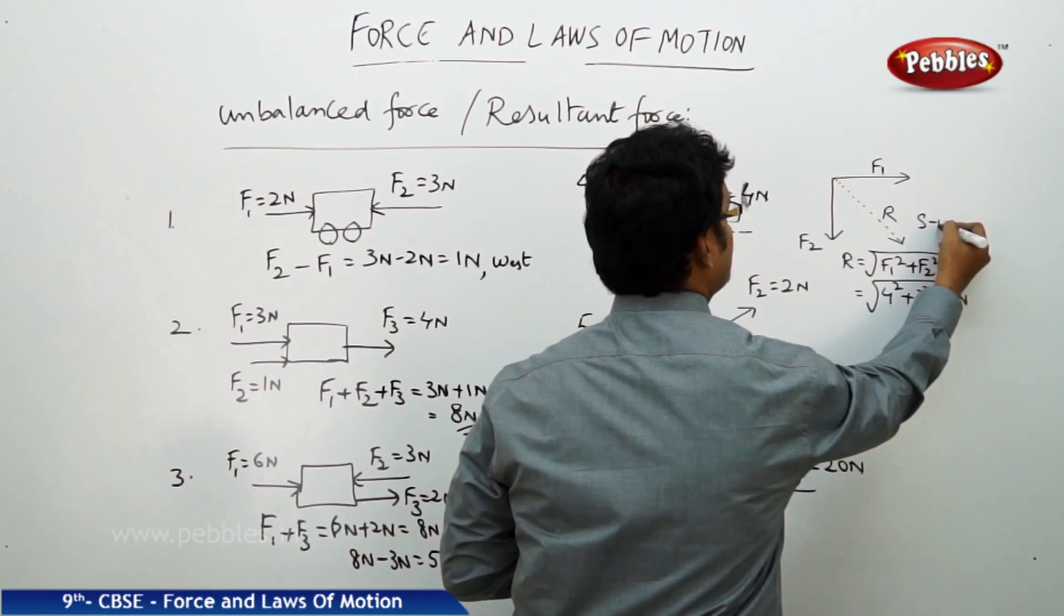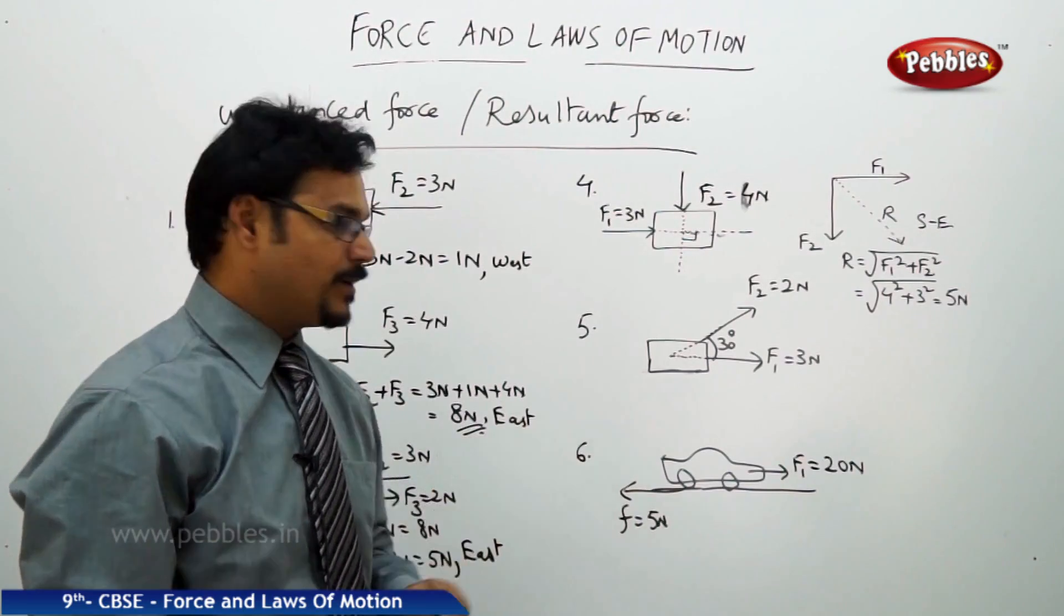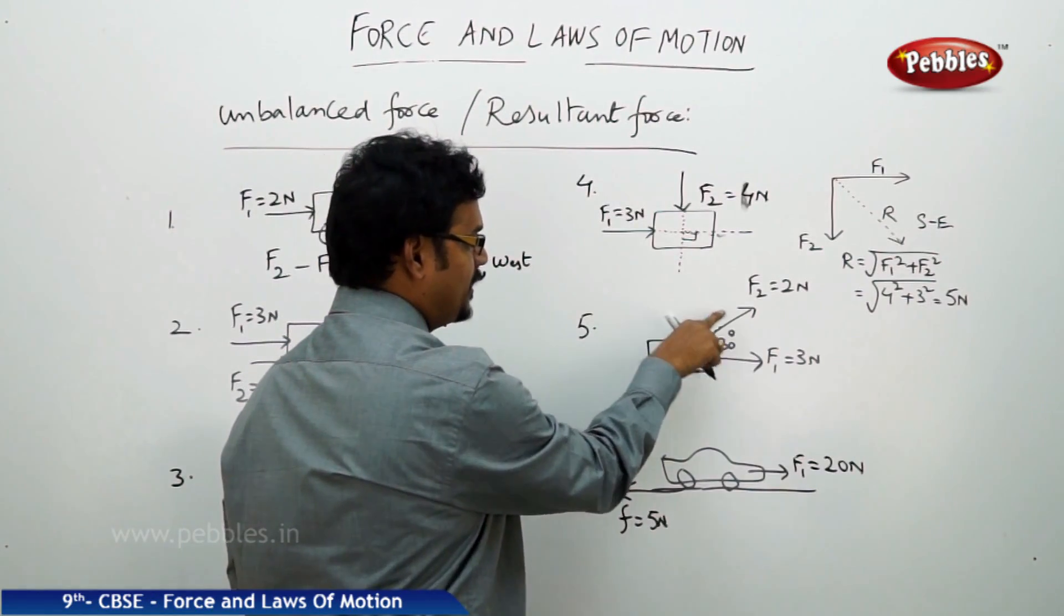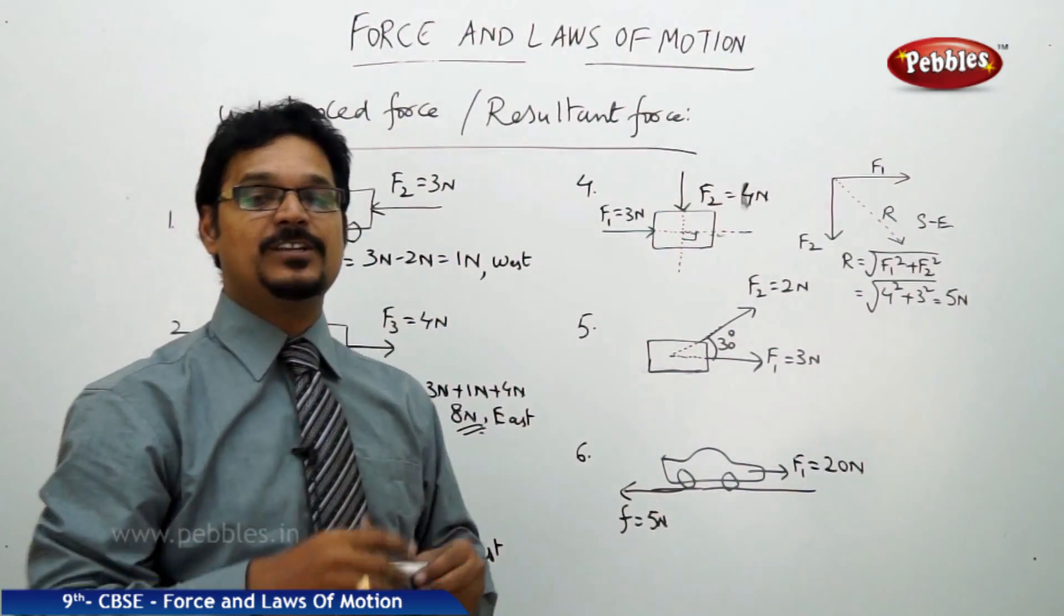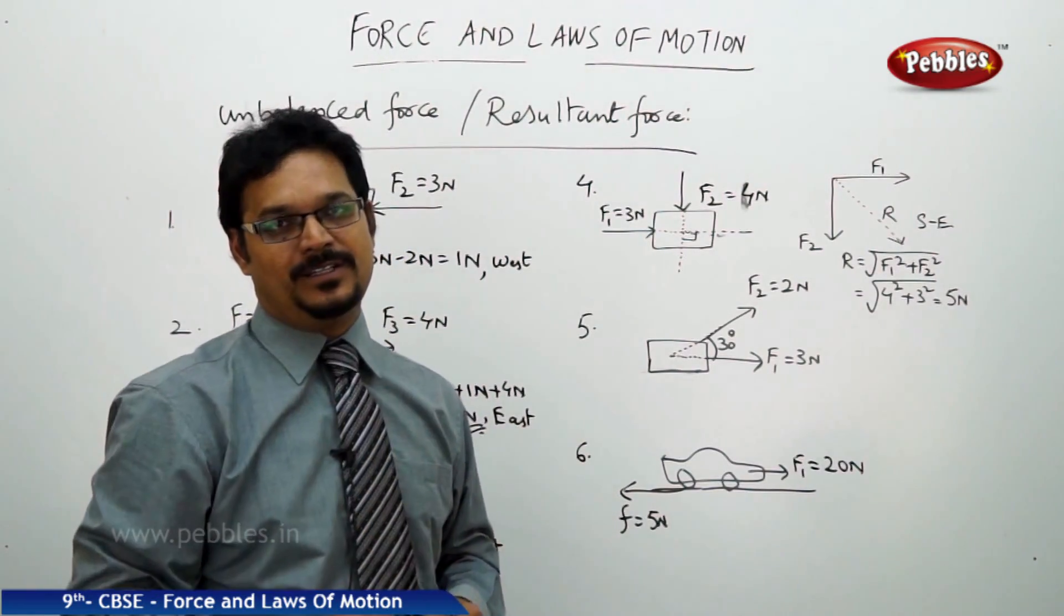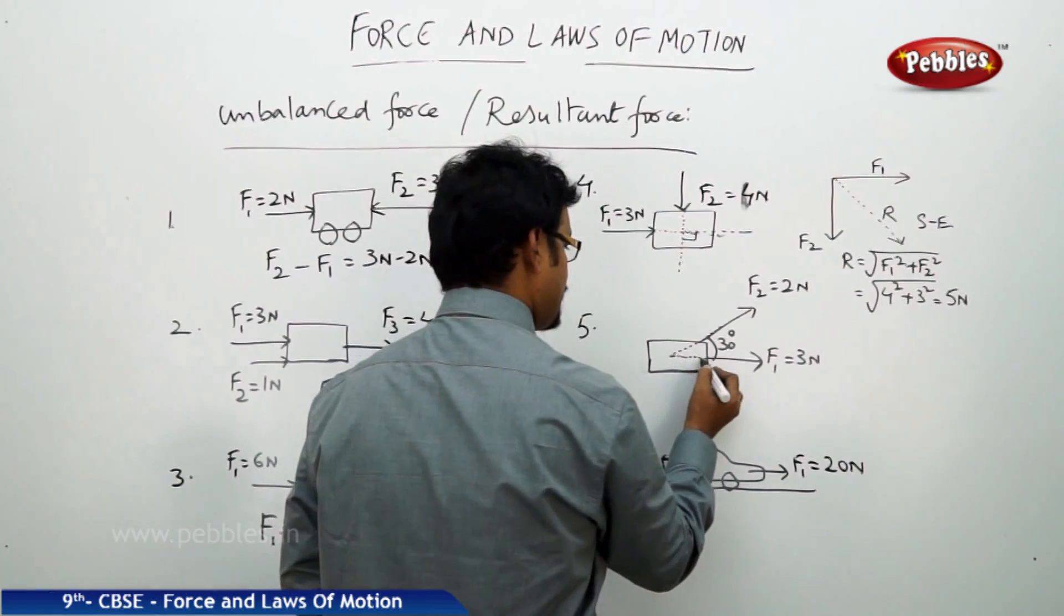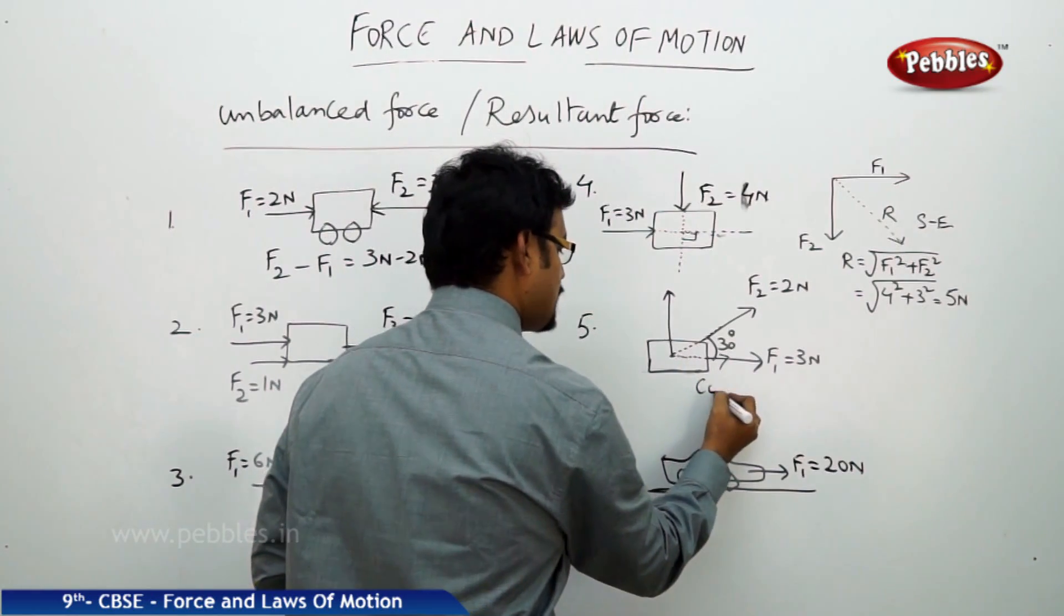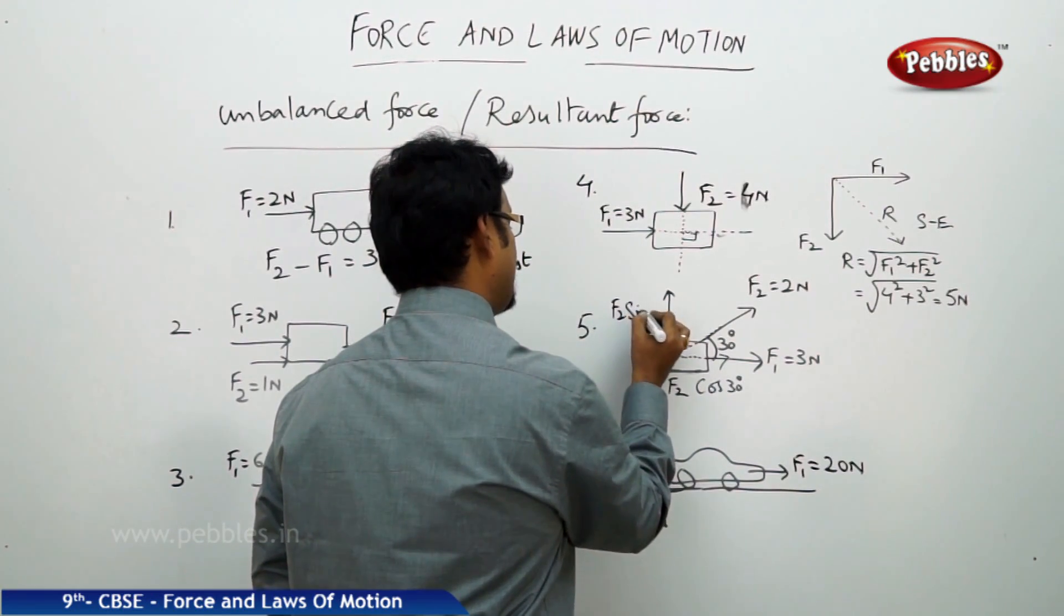Now see the fifth one, one more little difficult. It is not perpendicular but F2 force applied such that it makes an angle 30 degrees with F1. How do we solve this? You should know vectors, resolution of vectors. Resolve a vector along cos theta and sin theta. So here as F2 is a vector, it resolves into two components. One is along F1 and the other one is along vertical. And here it is F2 cos 30 degrees, and this is F2 sin 30.